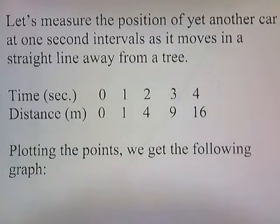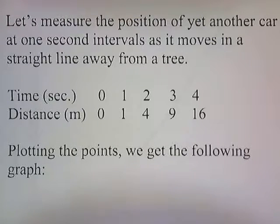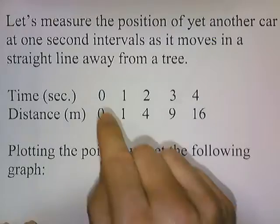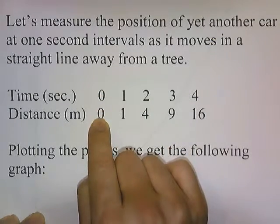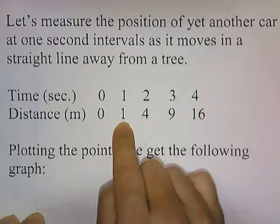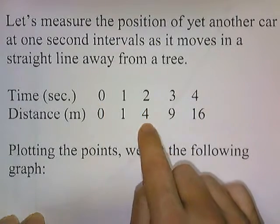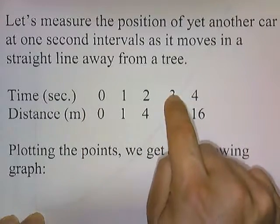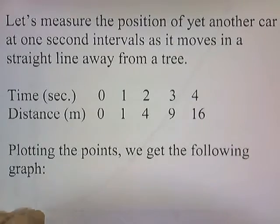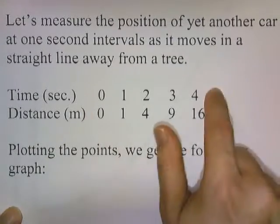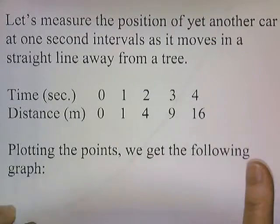Let's measure the position of yet another car at 1-second intervals as it moves in a straight line away from a tree. At time zero, the car is right at the tree. One second later, it's 1 meter from the tree. Two seconds later, 4 meters. Three seconds later, 9 meters. At 4 seconds, it's 16 meters away. Plotting time on the horizontal axis and distance on the vertical axis, notice that the plot is a curved line, not a straight line — it's flatter at first and steeper later.